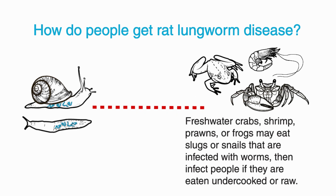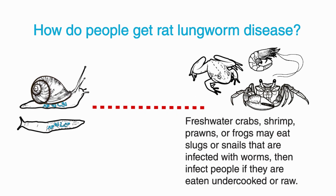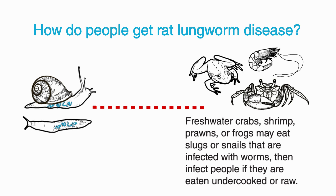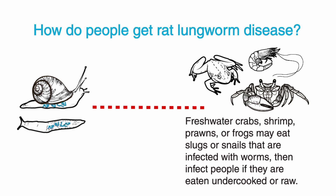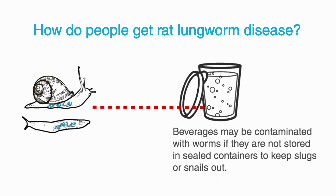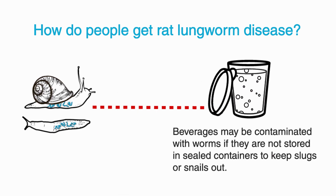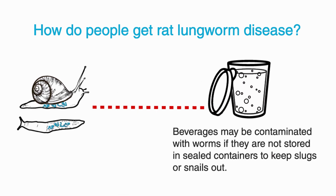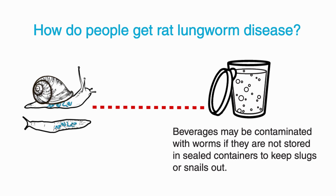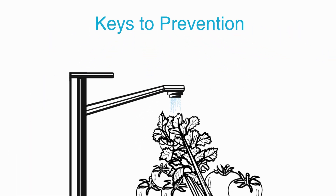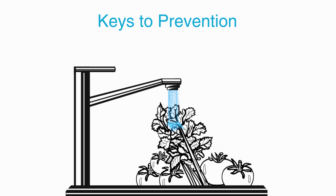Or, freshwater crabs, shrimp, prawns, or frogs may eat slugs or snails, become infected with worms, and then infect people if they're eaten undercooked or raw. Beverages may be contaminated with worms if they aren't stored in sealed containers to keep slugs or snails out.